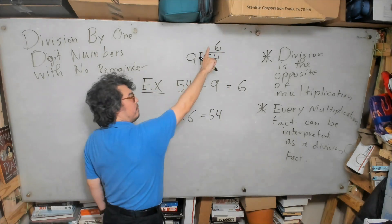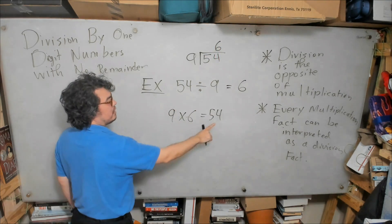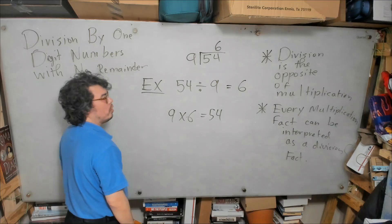Placing this on the outside of the house and placing the 6 here above the 4 of the 54. Not above the 5, but above the 4. Why? Because the 9 times 6 equals the whole 54.